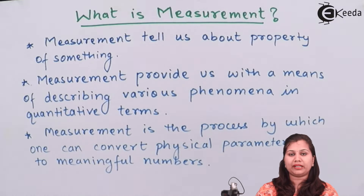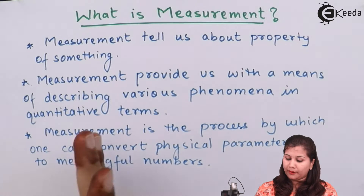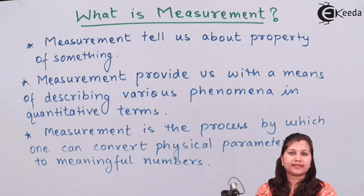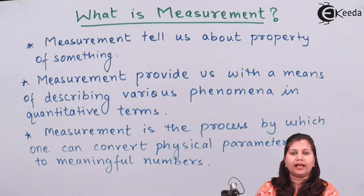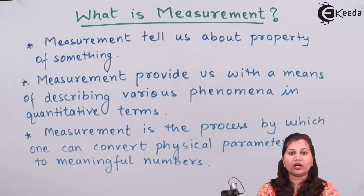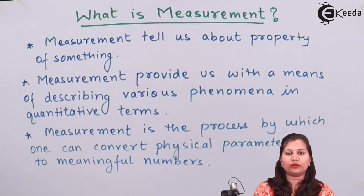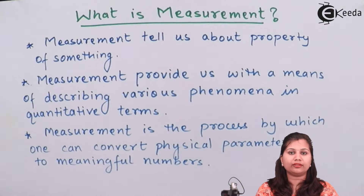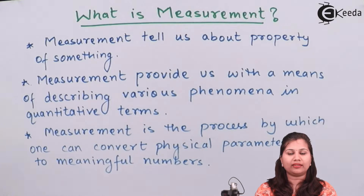Measurement gives us the means to describe the various phenomena occurring in nature in terms of quantity. In nature there are innumerable things, and measurement tells us the quantity of those things. For example, if we want to find out the length of a scale — how long that scale is — that is a measurement.